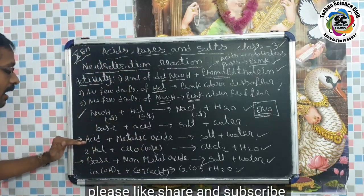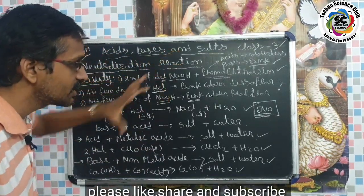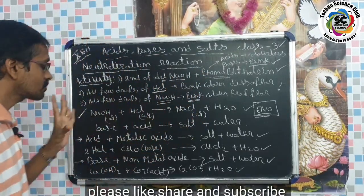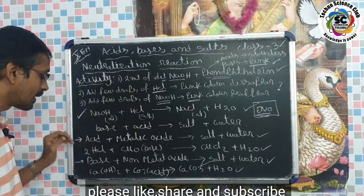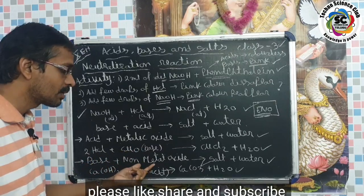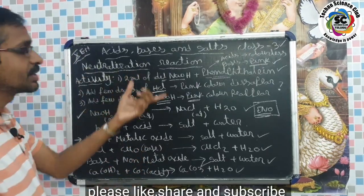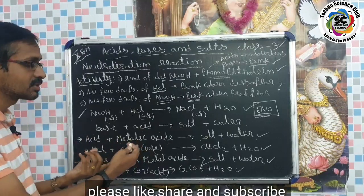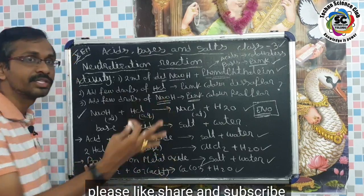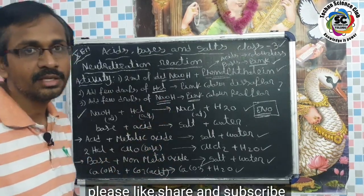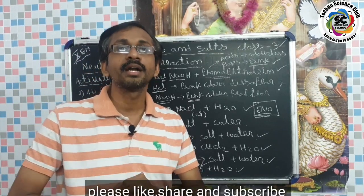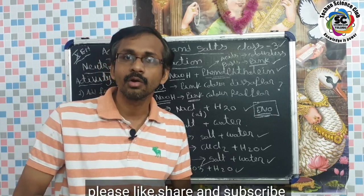In this class we learned about what a neutralization reaction is, how it works through an activity, and examples of neutralization reactions. We also learned that acids react with metallic oxides and bases react with non-metallic oxides — both are also neutralization reactions. We learned how metallic oxides are basic in nature and non-metallic oxides are acidic in nature. If you found this video useful for students and competitive exams, please like, share, and subscribe.